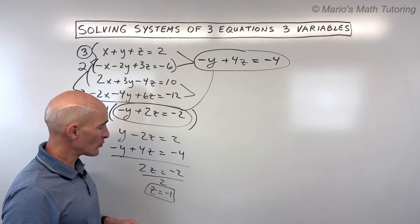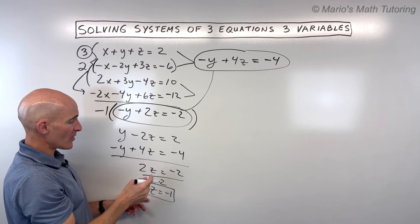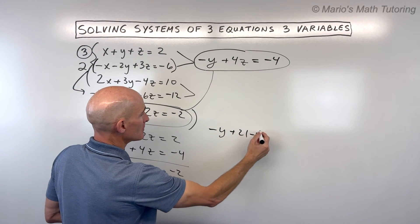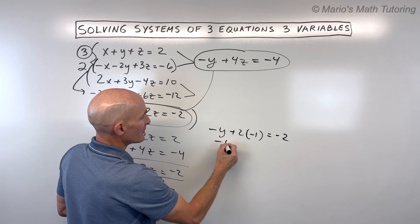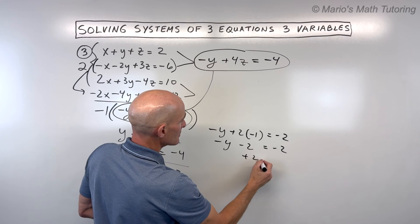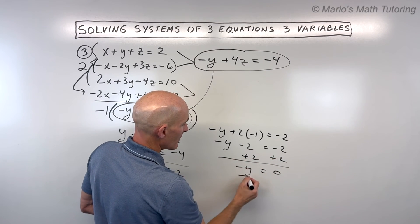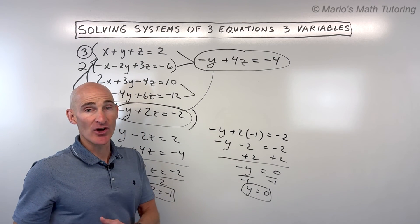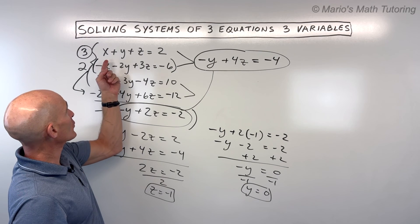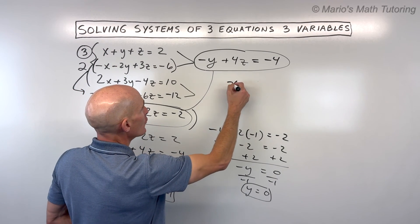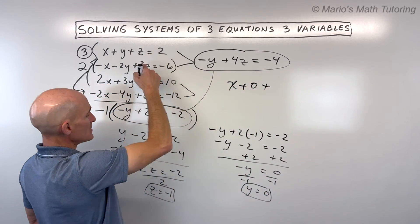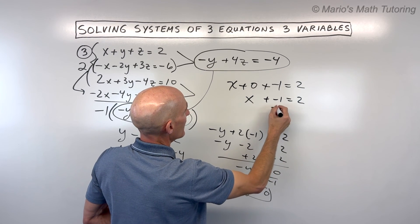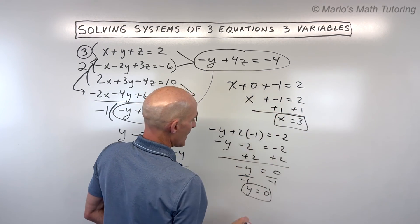Now we do back substitution, working our way back through the two-variable and then three-variable equations. Substituting z equals negative 1 into negative y plus 2z equals negative 2: negative y plus 2 times negative 1 equals negative 2, so negative y minus 2 equals negative 2. Adding 2 to both sides gives negative y equals 0. Dividing by negative 1, y equals 0. Now going back to the original three-variable equations — I'll use the first one: x plus y (which is 0) plus z (which is negative 1) equals 2. So x plus negative 1 equals 2, and adding 1 to both sides gives x equals 3.